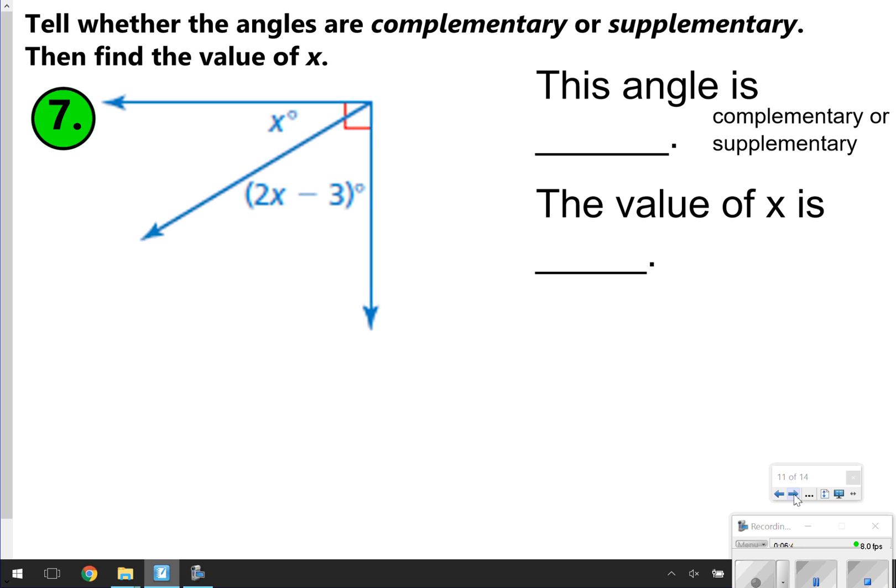Here's your next question, number 7. Tell whether the angles are complementary or supplementary, and then find the value of X. Similar to question 6. You're first going to tell me this angle is complementary or supplementary. And then you're going to tell me what does X equal to? So the value of X is what? Go ahead and take the time now to pause. Work it out with your partner. When you're done, go ahead and click play for your last question.